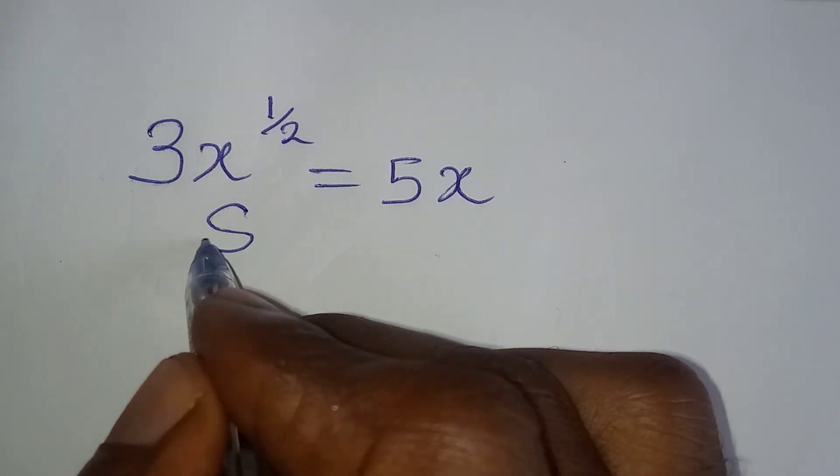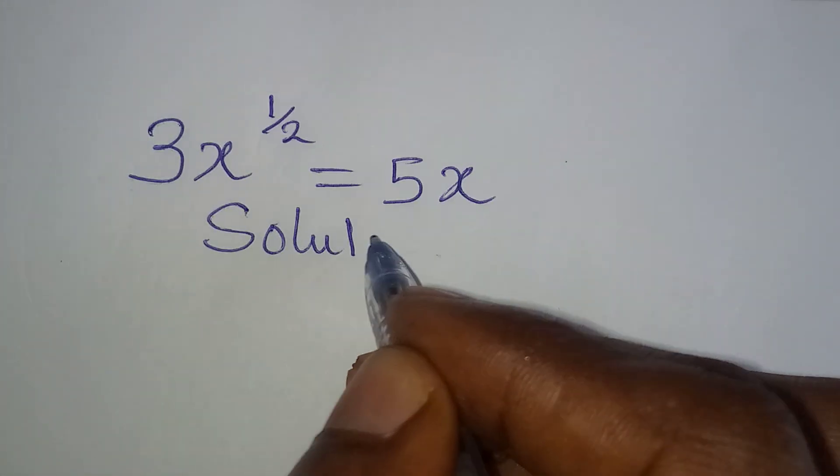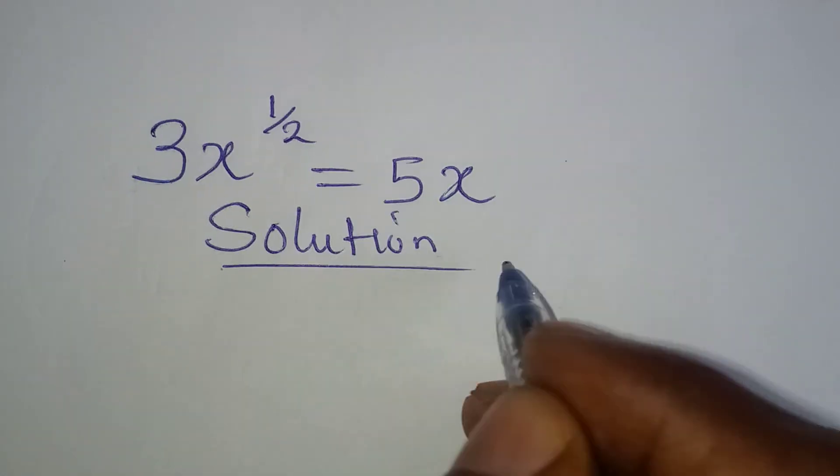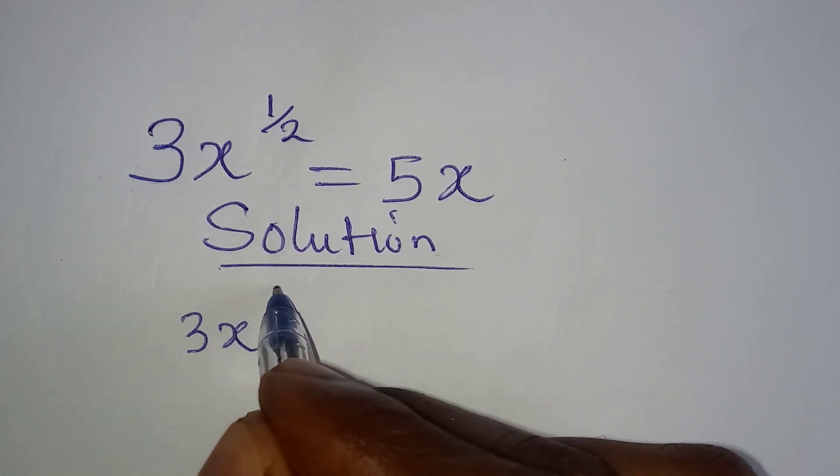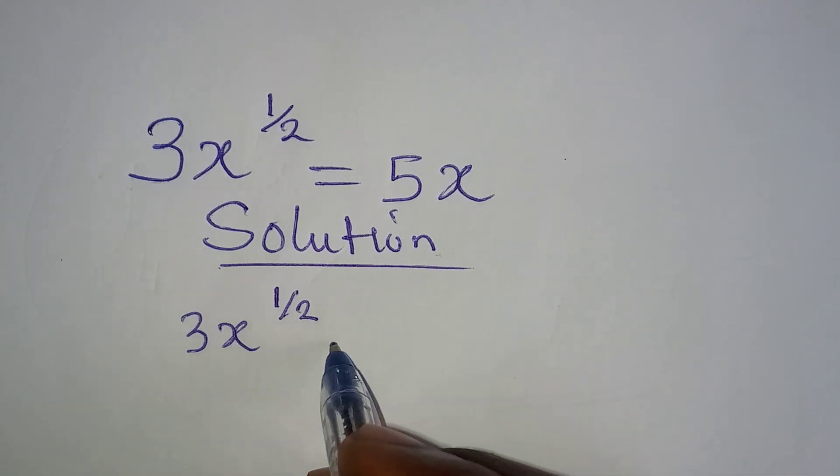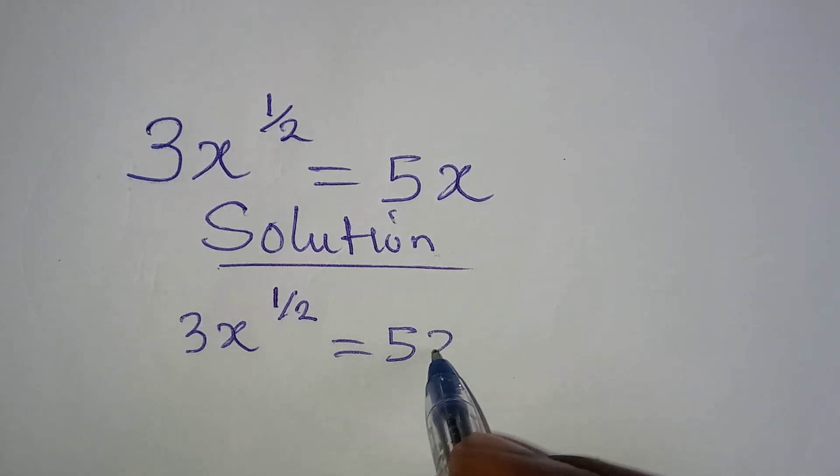Hello everyone. Let's solve this problem very quickly. We have 3x to the power of 1 over 2 to be equal to 5x.